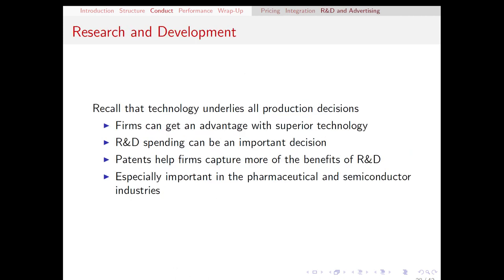Another interesting part of the conduct of firms is the amount of research and development and innovative activity that's going on. Remember that in economics, technology is how we turn inputs into outputs, and if the technology is more efficient, that's going to lower the cost for firms. If one firm in a market has superior, more efficient technology, that's going to allow them to lower their costs below their competitors — possibly only a temporary advantage, but an advantage nonetheless. So R&D spending is another important decision for firms and one that varies a lot between firms and between industries.